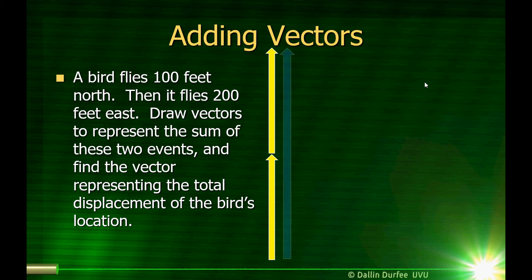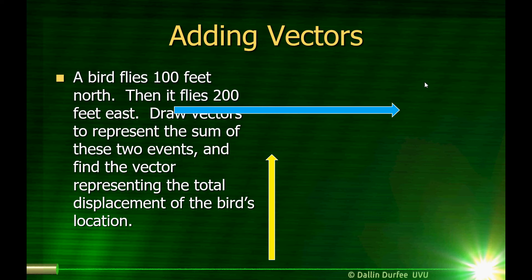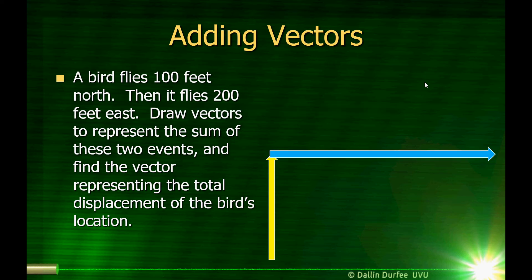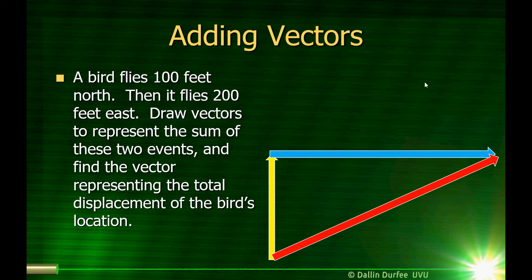Here's two arrows pointing north, so that's the length of my arrow pointing east. I'll just flip it to make it go east. I want to add those two displacements to find the total displacement of the bird's location, so I will put the beginning of the east vector at the end of the north vector. The sum of the two is just the red arrow right here, which represents the total displacement of the bird's position.